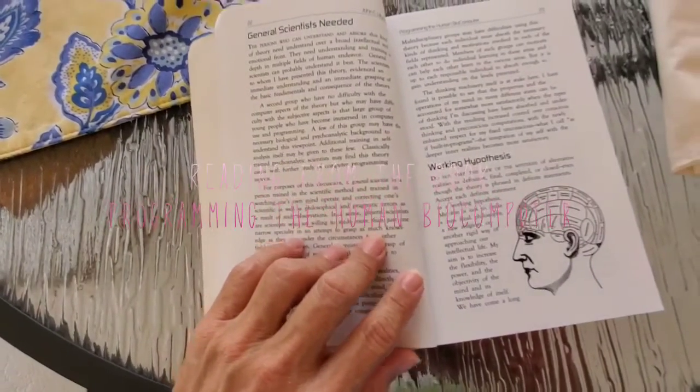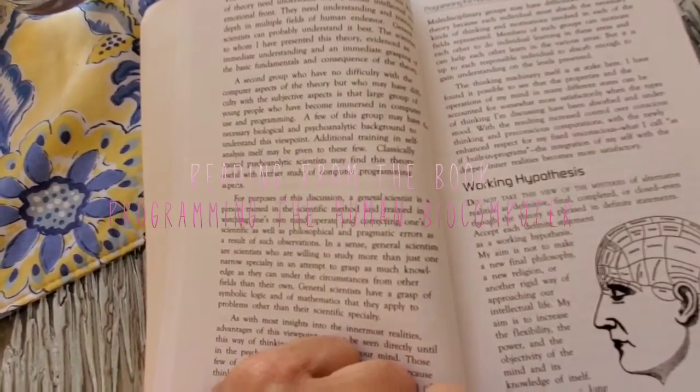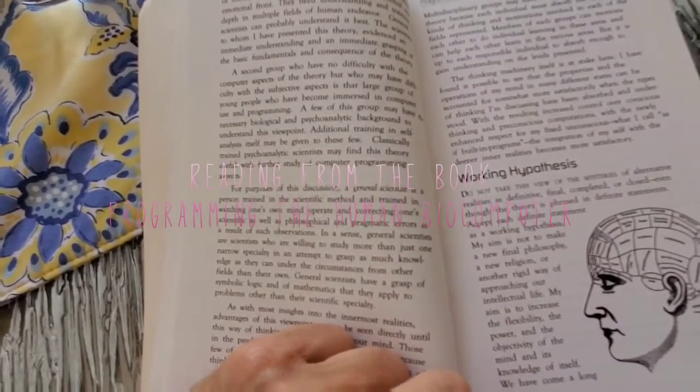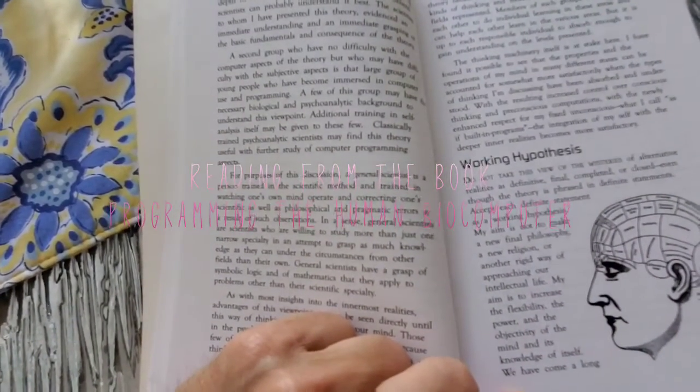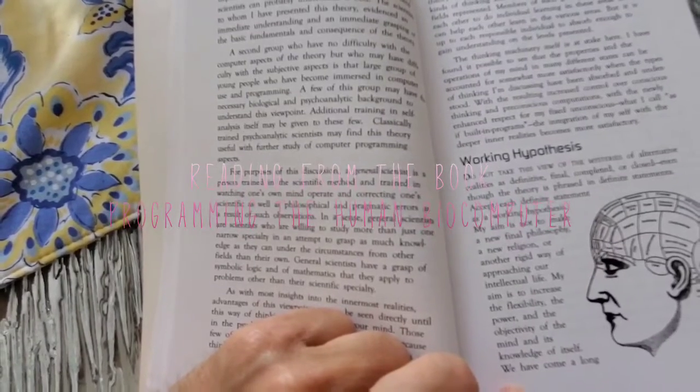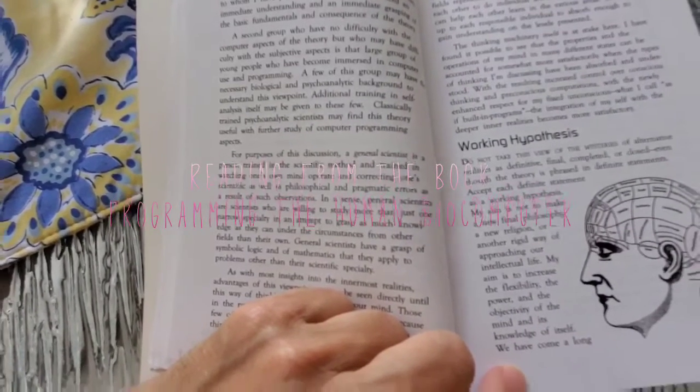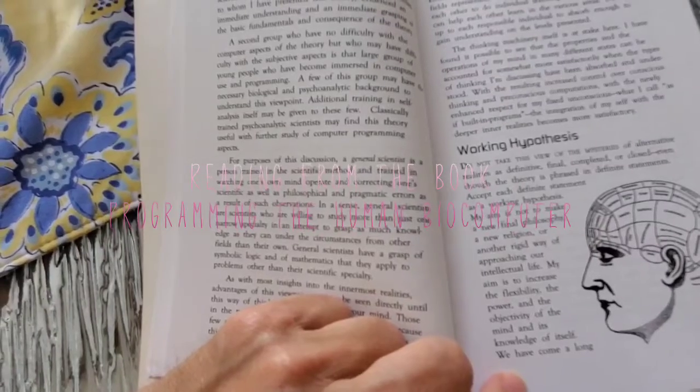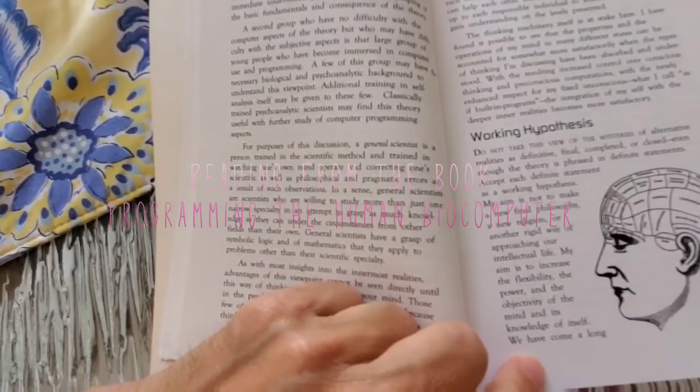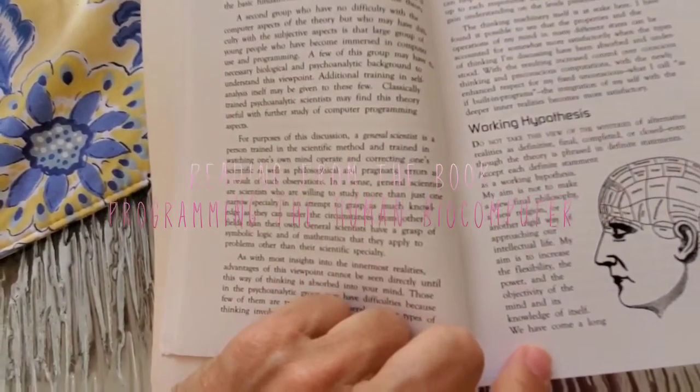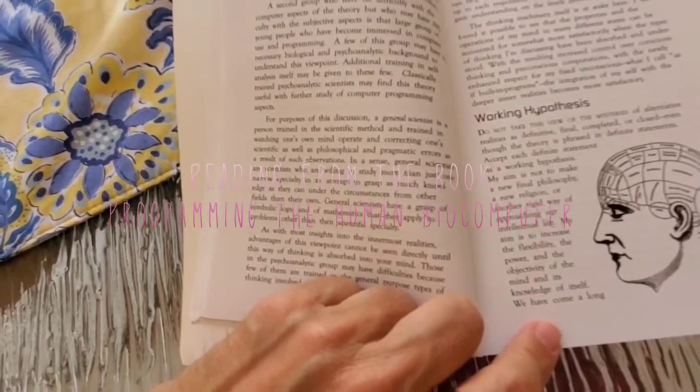Study of computer programming aspects. For purposes of this discussion, a general scientist is a person trained in the scientific method and trained in watching one's own mind operate in correcting one's scientific as well as philosophical and pragmatic errors as a result of such observations. In a sense, general scientists are willing to study more than just one narrow specialty in an attempt to grasp as much knowledge as they can from other fields than their own. General scientists have a grasp of symbolic logic and mathematics that they apply to problems other than their scientific specialty.